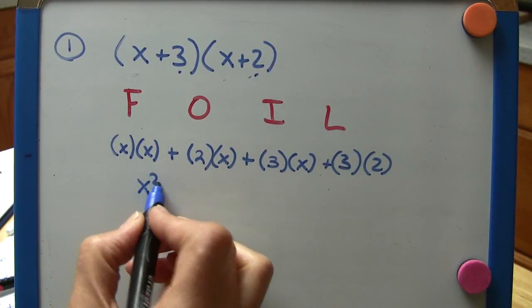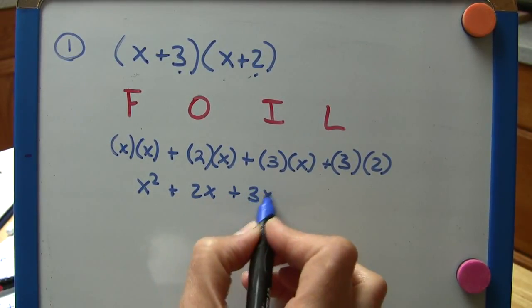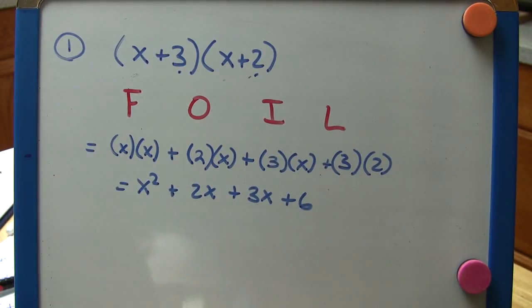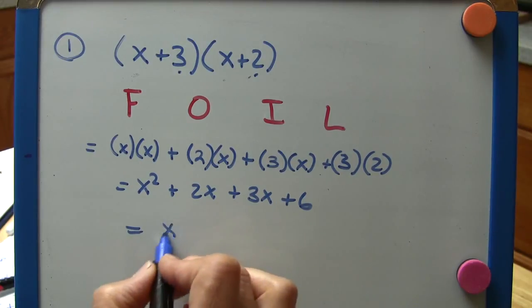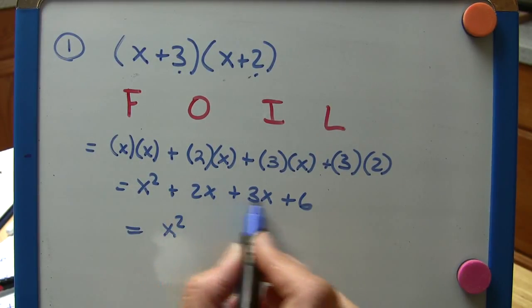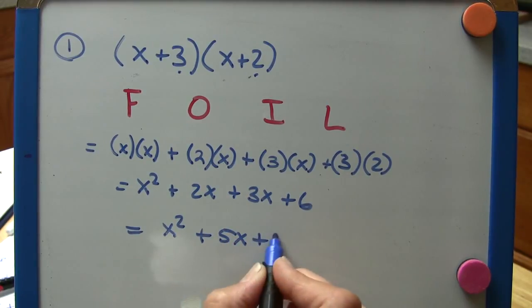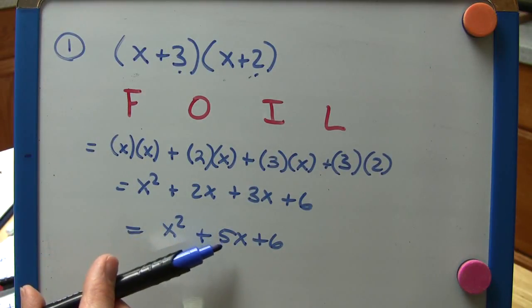Multiplying these things out, we get x squared plus 2x plus 3x plus 6. We're going to combine our two middle terms here. So we get x squared, and the two middle terms are 2x and 3x, so that's 5x plus 6. So these two binomials multiplied together equal x squared plus 5x plus 6.